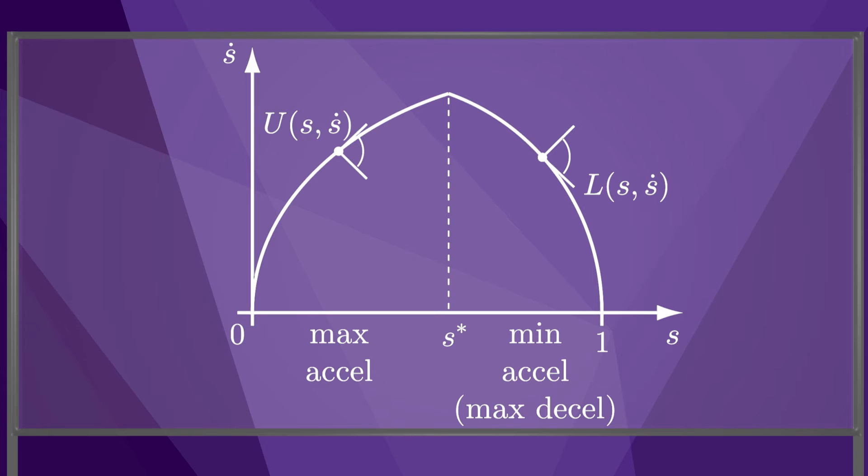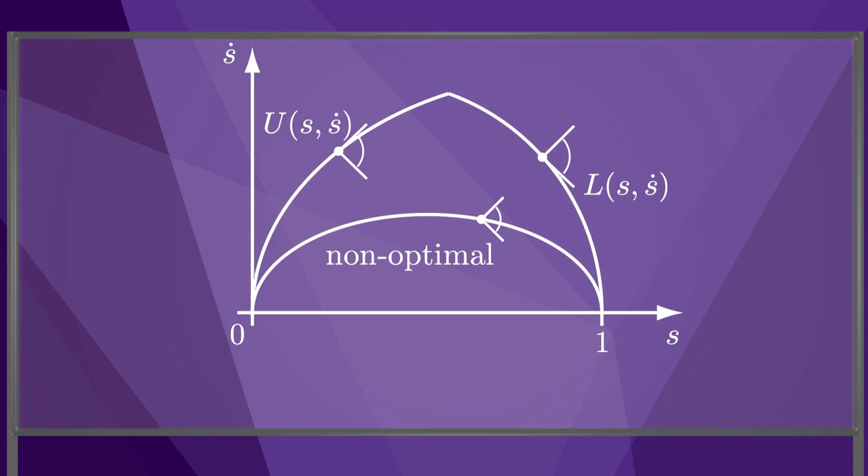This time-scaling keeps the speed s dot as high as possible at all times, and therefore the duration of the motion is as short as possible. This kind of trajectory is called a bang-bang trajectory, because one or more of the actuators bangs against the limit during the first segment, then one or more of the actuators bangs against the limit during the second segment. Compare this to a non-optimal trajectory, where the tangent to the time-scaling is in the interior of the motion cones, not on the edges. The speed of the robot at any given position s is lower than what it is for the time-optimal time-scaling.